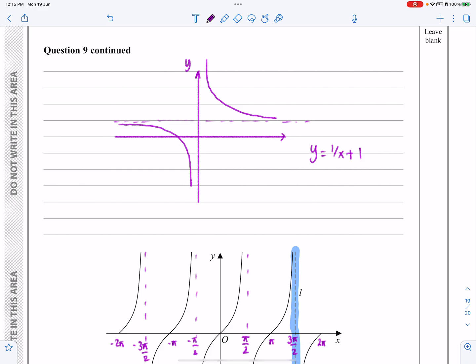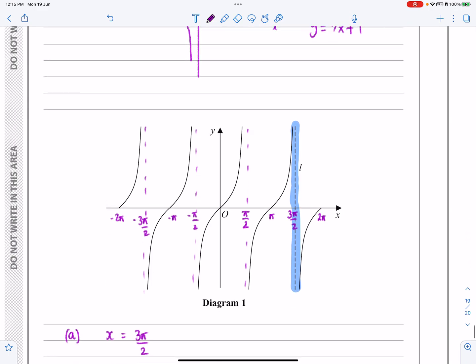I'll just tidy this up now. 1 over x plus 1. If we've got the y-axis and the x-axis like that, this is the line y equals 1 is the asymptote. So what I now need to do is transpose that onto this graph.